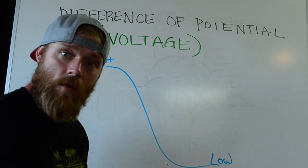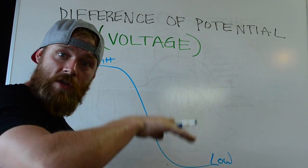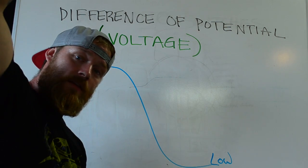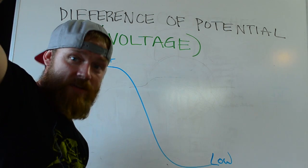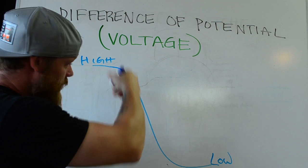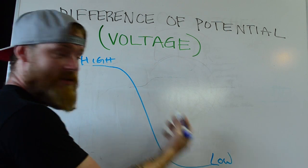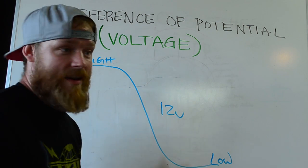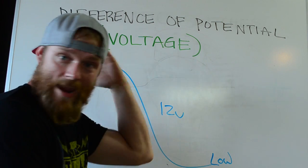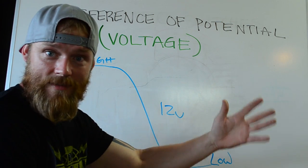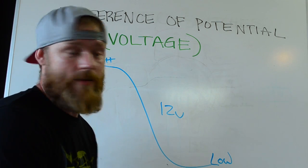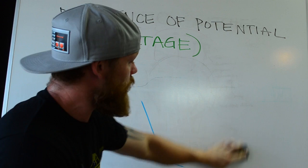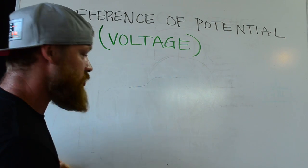Same thing with electricity. The more voltage you have — which is the more of a difference of potential energy — the more dangerous that electricity is. This is akin to like 12 volts, but if you have 500,000 volts like Niagara Falls, that is going to kill you instantly. So that's how you can think of voltage when you hear difference of potential.